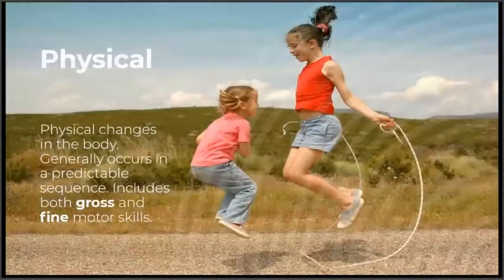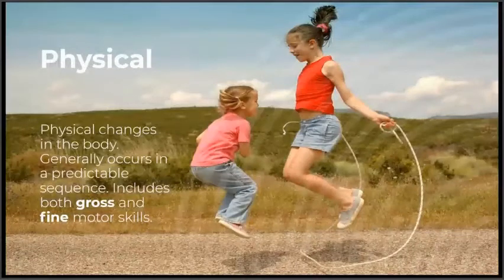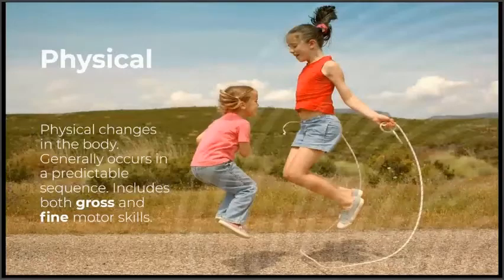Physical development includes physical changes in the body and generally occurs in a predictable sequence. It includes both gross and fine motor skills. Gross motor includes jumping, skipping, leaping, and galloping, and fine motor would be things like picking up small objects and holding a crayon.